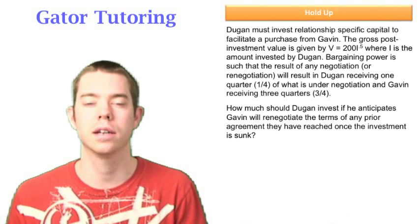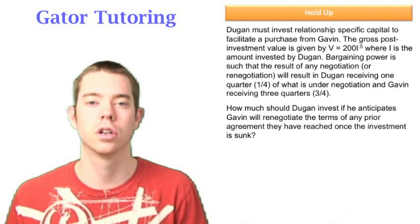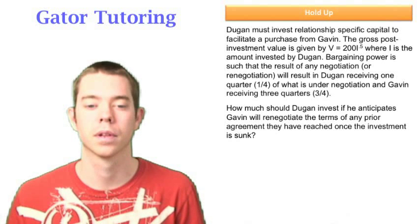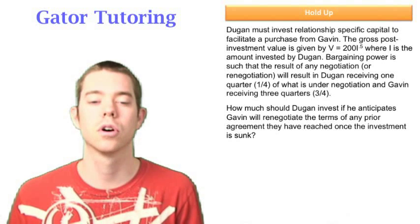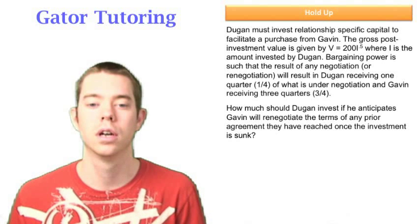The value that they can create is given by some function of the amount Dugan invests, which they say is I. It tells us that bargaining power is such that the result of any negotiation or renegotiation will result in Dugan receiving one-fourth of what is under negotiation and Gavin receiving three-quarters.